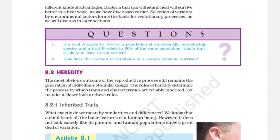Heredity. The most obvious outcome of the reproductive process still remains the generation of individuals of similar design. The rules of heredity determine the process by which traits and characteristics are reliably inherited. Let us take a closer look at these rules.